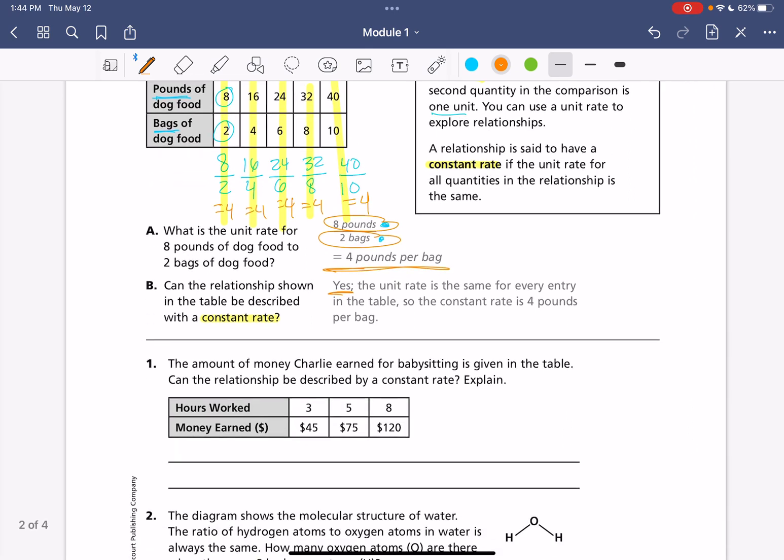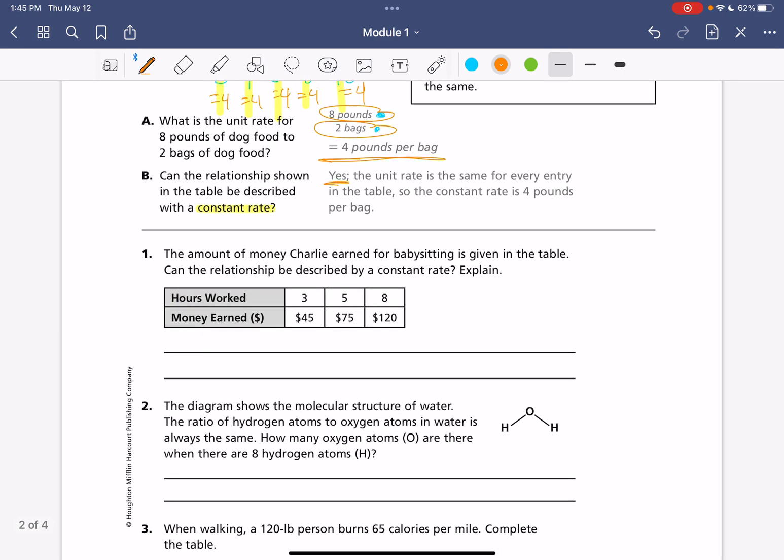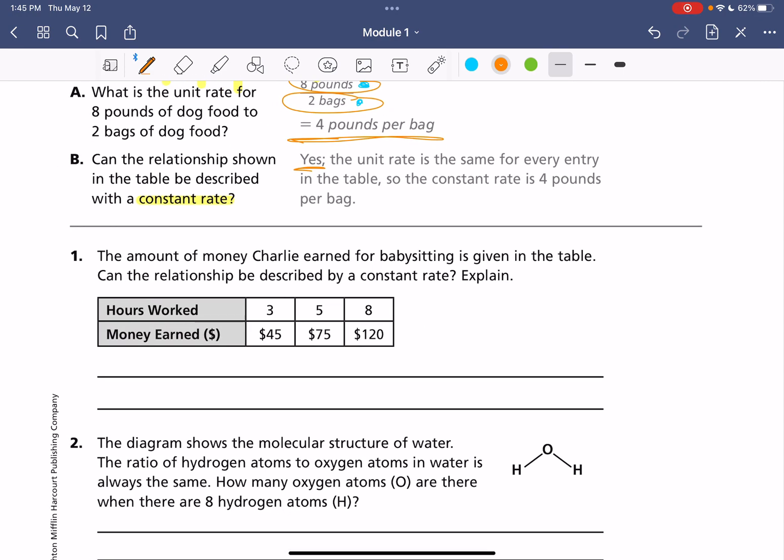All right. Here we have Charlie, who's doing a little babysitting. And we're trying to figure out if this relationship is a constant rate. So here we have the amount of money Charlie earned for babysitting is given in the table. Can the relationship be described by a constant rate?